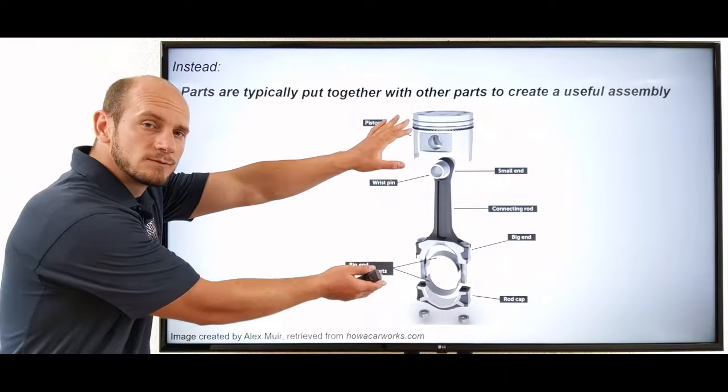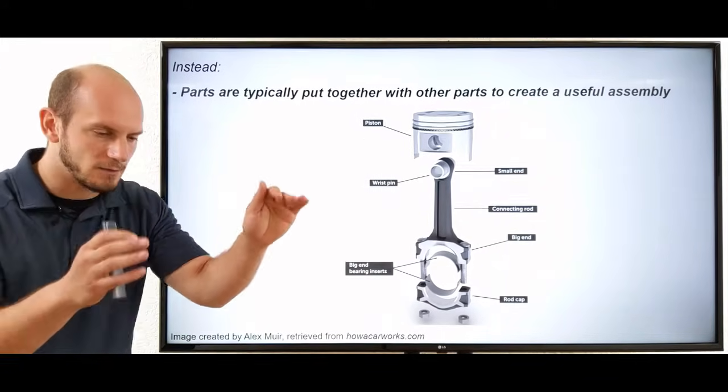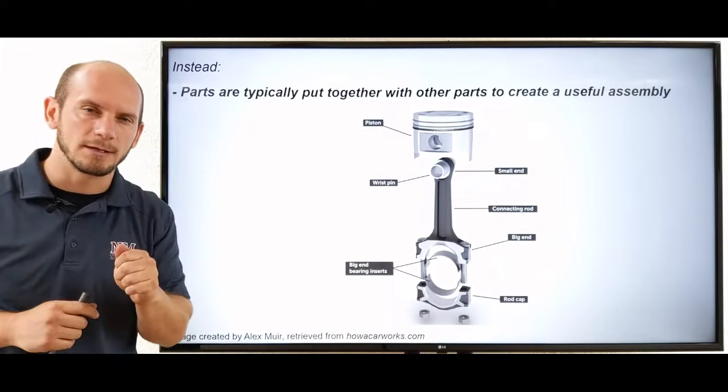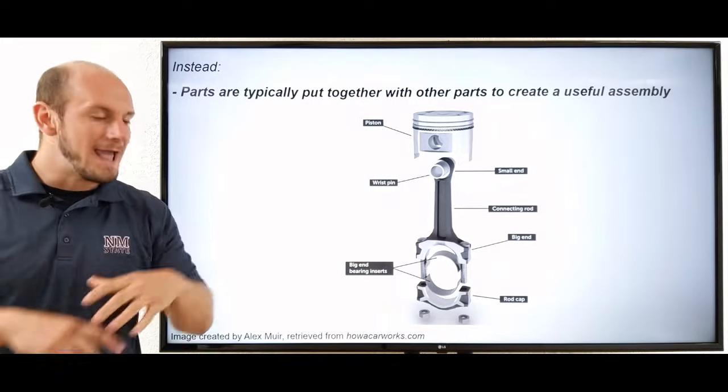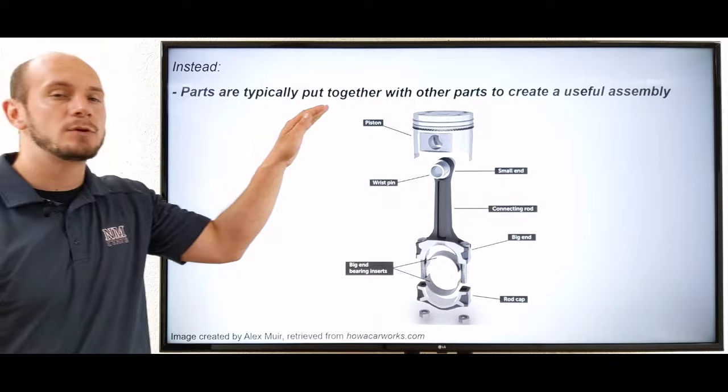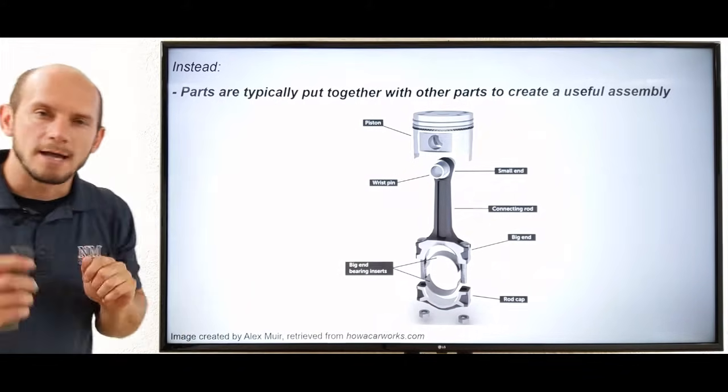We could then take this useful assembly, put it into a larger engine assembly, take that larger engine assembly, and put it into an even larger vehicle assembly. And now that vehicle, as an assembly of parts, is now useful to us. So again, parts are typically put together with other parts to make a useful assembly.